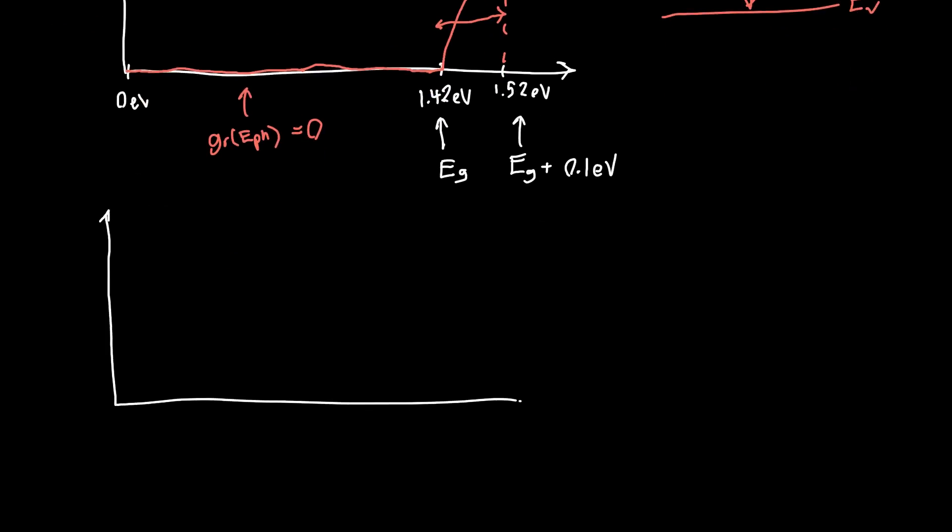So if we zoom in on that region, from our band edge to Eg plus 0.1 eV, we'll still get 5270 inverse centimeters will be our final point. And then it'll look roughly like this square root shape. So it'll initially have a very large derivative. And then it'll kind of smooth out as you get to higher and higher energies.